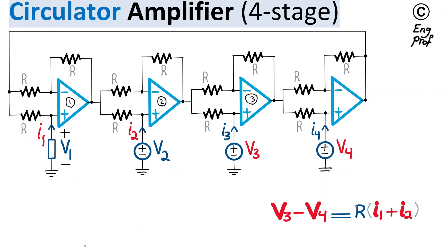In the circulator amplifier shown here designed using four op amps, we want to show that the delta between V3 and V4, these two voltages, is a function of R times I1 plus I2, in which I1 and I2 are these two currents, and R is the resistor repeated in the circuit, the parameter of the circuit. It is interesting because we are not talking about I3 and I4, we are talking about I2 and I1 here.